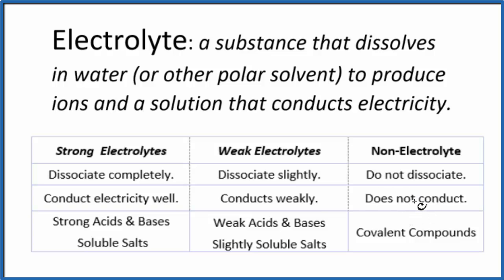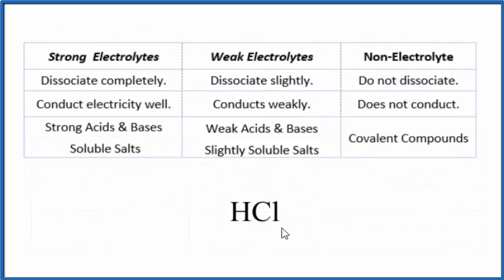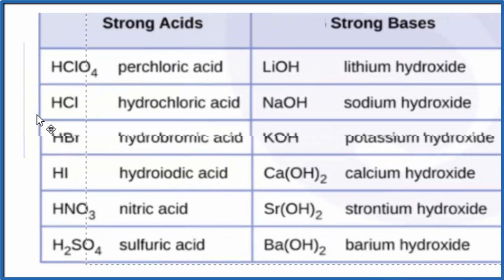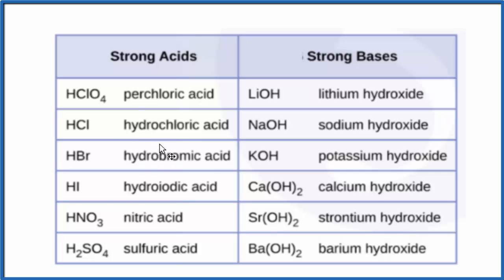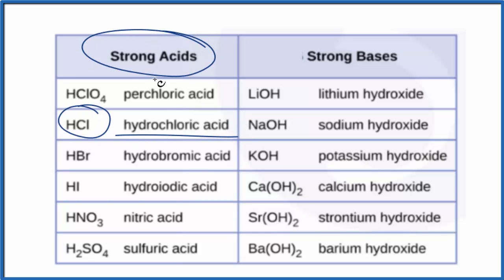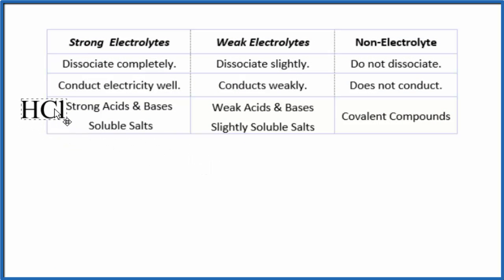I'll put a substance up and use this table to determine whether it's a strong, weak, or non-electrolyte. Let's look at HCl. The H in front tells us it's going to be an acid, so we know it'll be a strong or weak electrolyte. To know if it's strong or weak, the best way is to memorize the common strong acids and common strong bases. HCl — hydrochloric acid — is on that list, so it's a strong acid. That means it's a strong electrolyte.